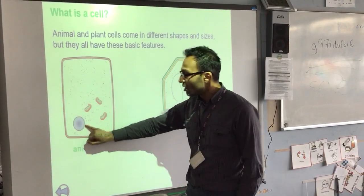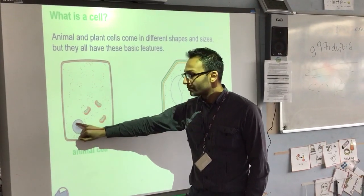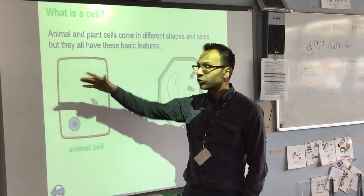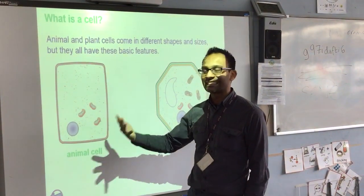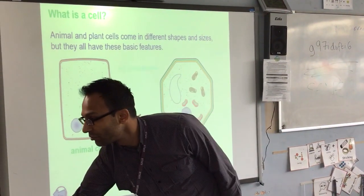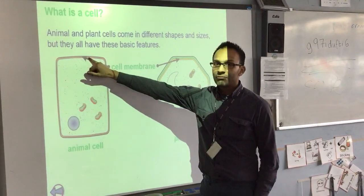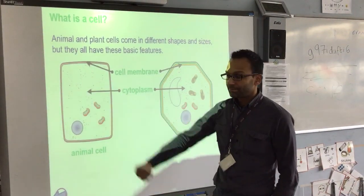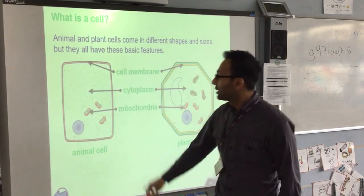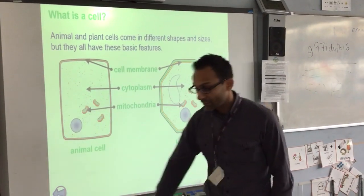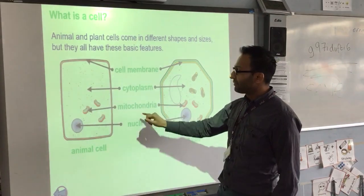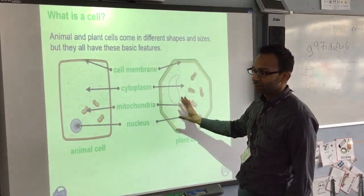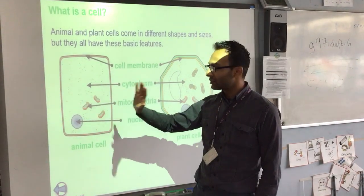Moving further in, this purple little circle — we call that the nucleus. This controls what the cell does, the cell activity. So to summarize: cell membrane, cytoplasm, mitochondria, and finally the nucleus. In another lesson I will come to the plant cell, but let's just keep our attention on the animal cell to begin with.